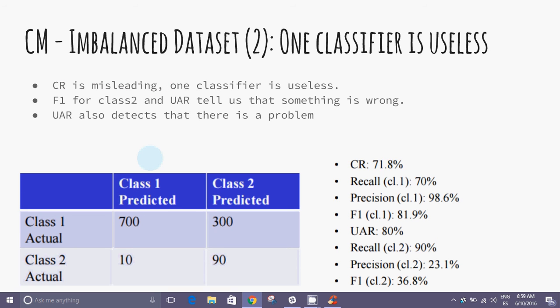In the second case, one classifier is useless. F1 score for class 2 and UAR tells you that something is wrong. UAR also detects that there is a problem.